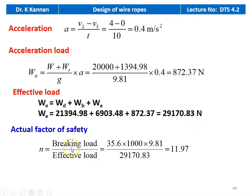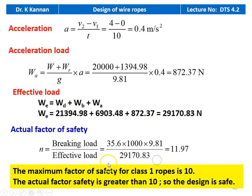The actual factor of safety equals breaking load divided by effective load: 35.6 tons into 1000 into 9.81 divided by 29,170.83 equal to 11.97. The maximum factor of safety for class 1 mining applications is 10, and the actual factor of safety is greater than 10, so the design is safe.